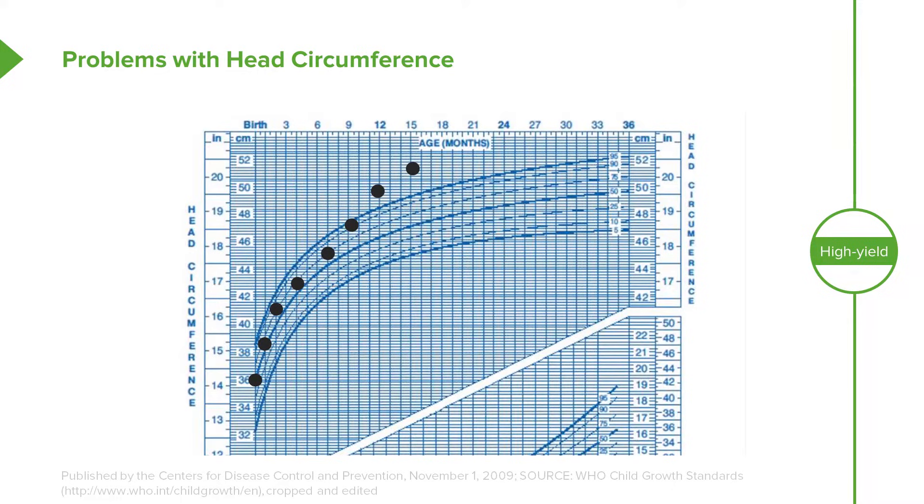This child perhaps has a new onset hydrocephalus or increased pressure of the cerebral spinal fluid in the brain, which is causing the head circumference to gradually expand more than you would like. By tracking it, we get a sense of where this child is intentionally going and when it changes from what we would expect.